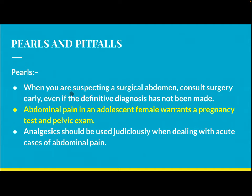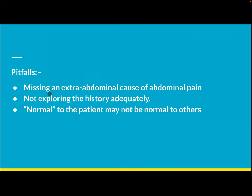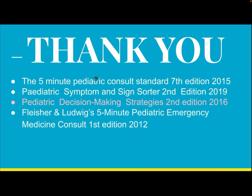Pearls and pitfalls: when suspecting a surgical abdomen, consult surgery early even if the definitive diagnosis has not been made. Abdominal pain in adolescent females warrants a pregnancy test and pelvic exam. Analgesics should be used judiciously. Avoid missing an extra-abdominal cause of abdominal pain. Explore the history adequately — what is normal to the patient may not be normal to others.